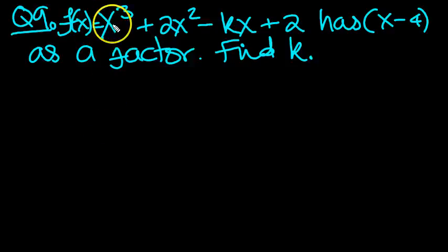Right, so this one then. f of x equals x cubed plus 2x squared minus kx plus 2 has x minus 4 as a factor. We need to find k for question 9.